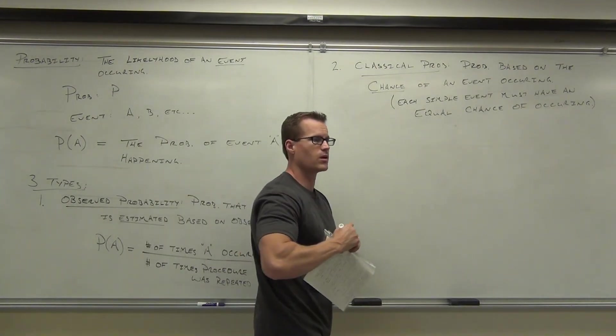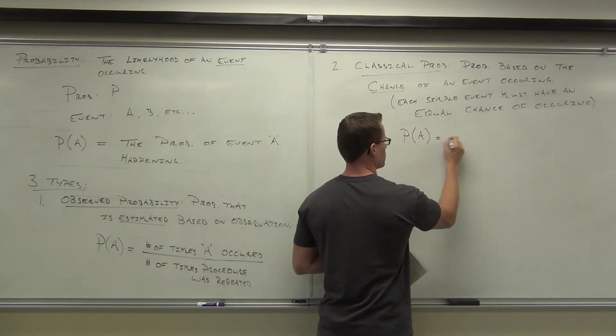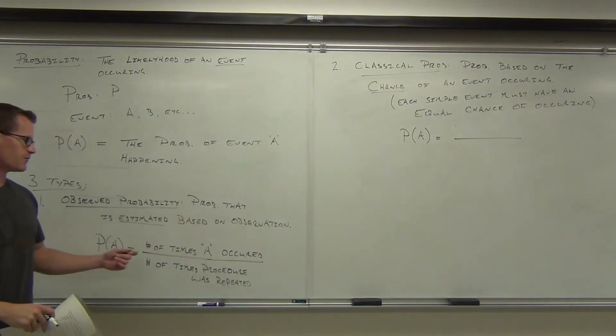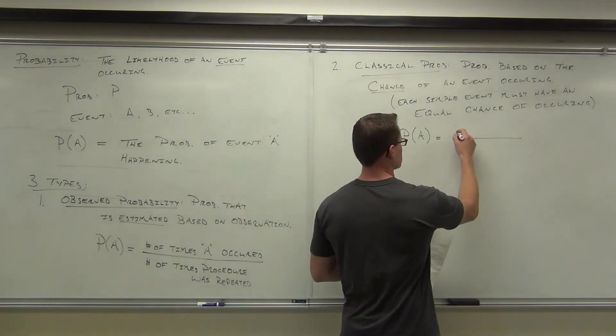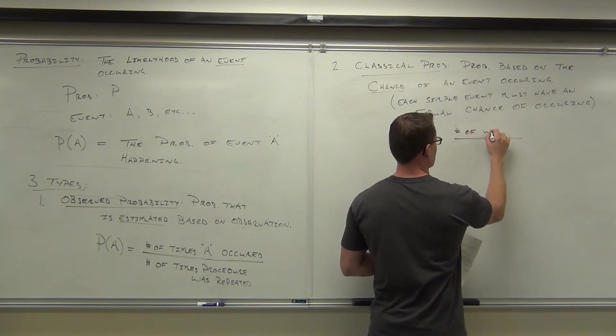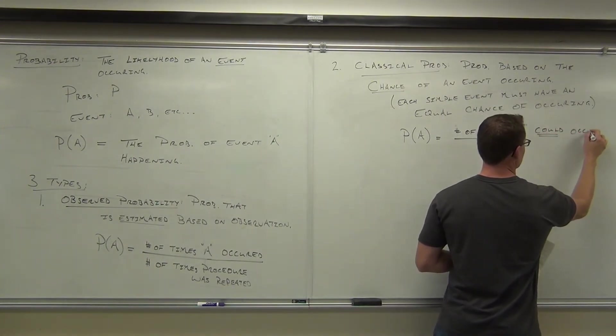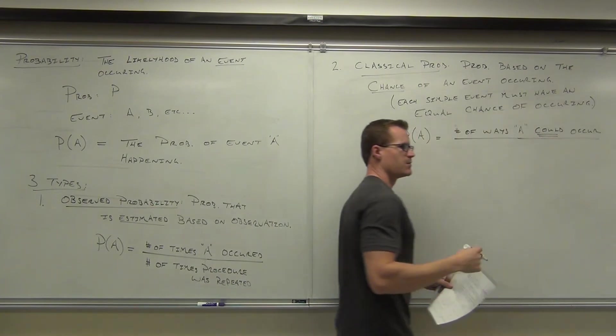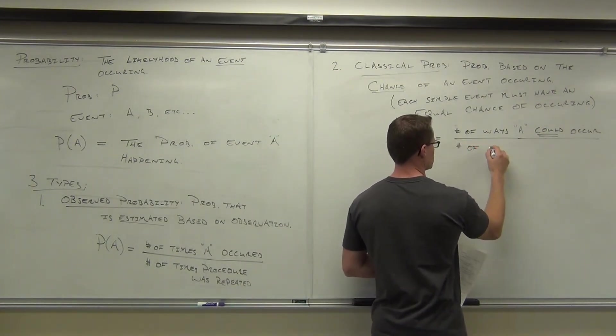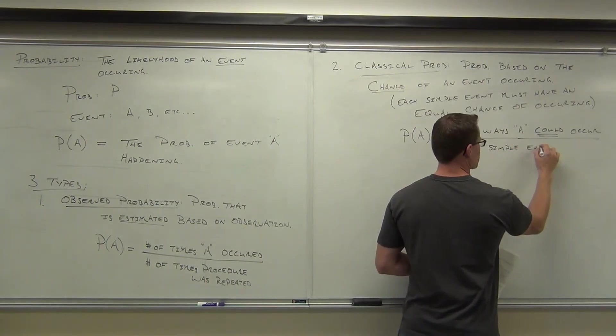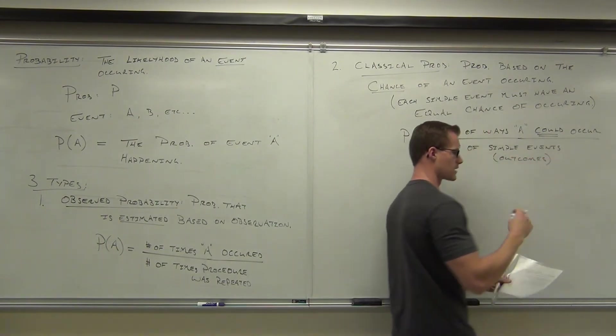The way that we did this, you've already done it. You know classical probability intuitively. It looks really similar, it's just that instead of number of times A occurred, we say the number of times A could occur, or number of ways, divided by the total number of possible outcomes again. There's a number of simple events, and we just mean outcomes there.